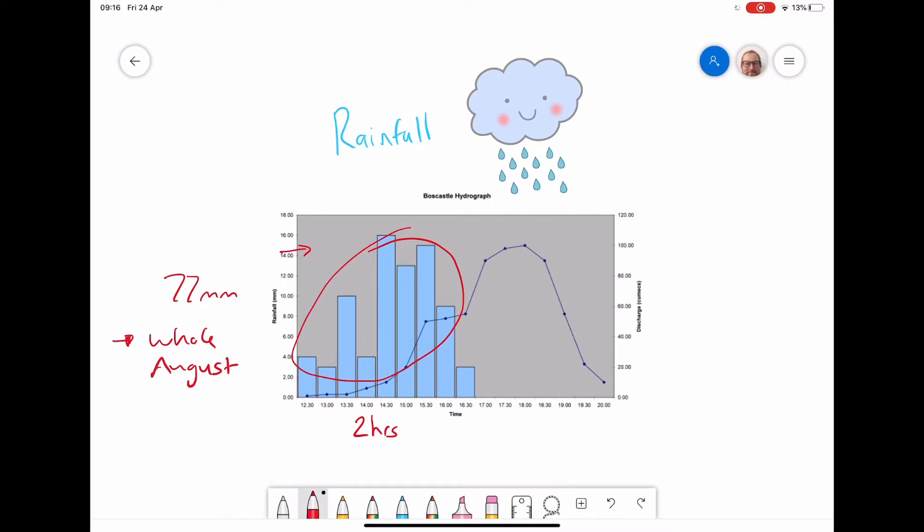If a river has that amount of water falling in it, the first thing we get is high rainfall, then the discharge rapidly increases. We can see that on our hydrograph here. The discharge rapidly increases from about 20 cumecs to suddenly 100 cumecs in the space of under three hours. So it's a rapid increase in the amount of discharge.